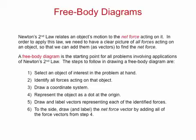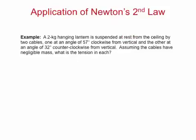Okay, let's put this procedure to practice with an example problem. A 2-kilogram hanging lantern is suspended at rest from the ceiling by two cables, one at an angle of 57 degrees clockwise from vertical, and the other at an angle of 32 degrees counterclockwise from vertical. Assuming the cables have negligible mass, what is the tension in each?